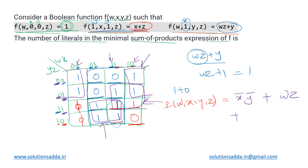The third min-term group of size four gives x from the column and y from the row, giving xy. So the minimum SOP expression for f is x̄ȳ + wz + xy. Counting the literals: x̄, ȳ, w, z, x, y — there are one, two, three, four, five, six literals in this SOP expression. The answer for this question is six.